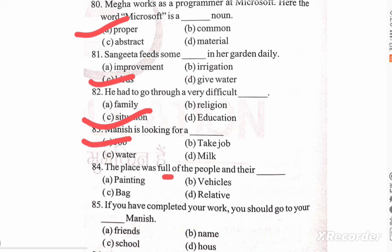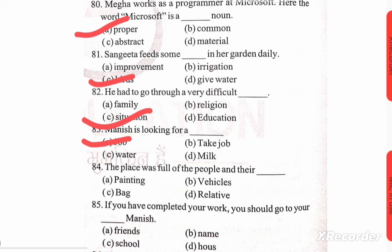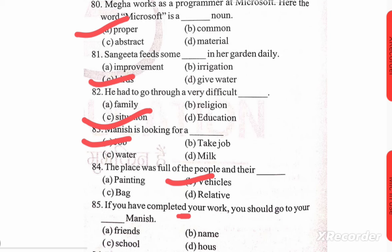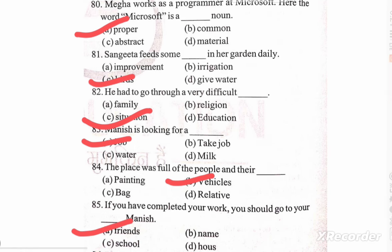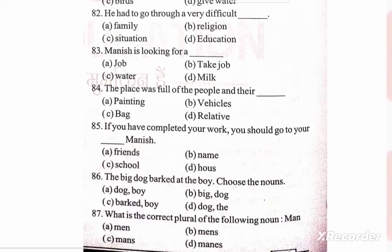The place was full of people and their blank space. Options: paintings, vehicles, bag, relative. Correct option is B — vehicles. If you have completed your work you should go to your blank space. Options: friends, name, school, house. Correct option is A. The big dog barked at the boy — choose the noun.